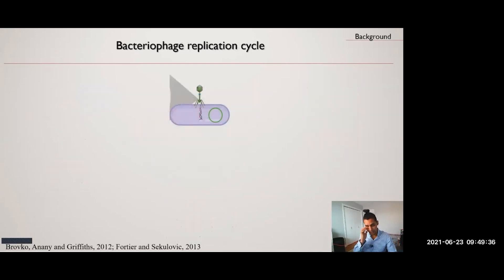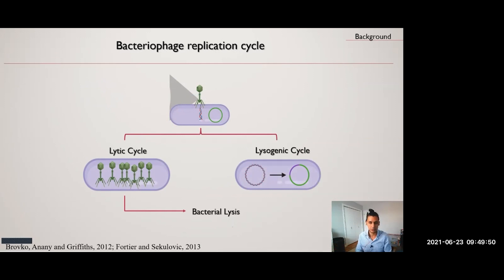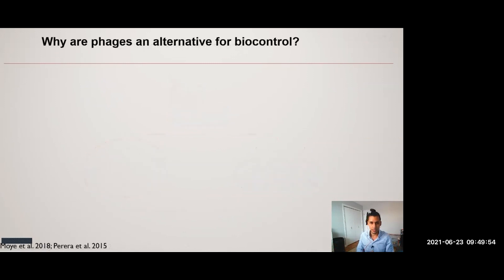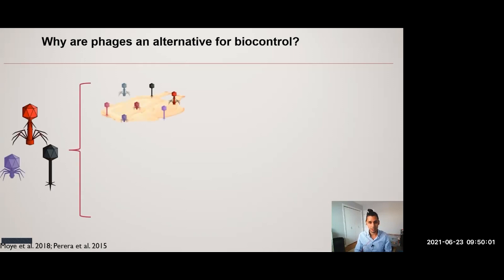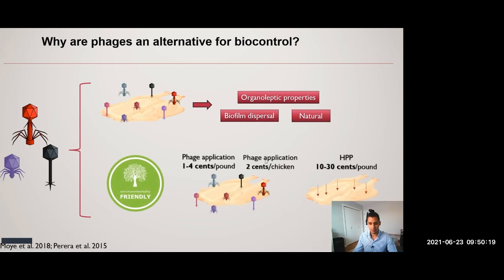Phages can replicate via two different cycles: the lytic cycle and the lysogenic cycle. We are focusing on the lytic cycle because it leads to bacterial lysis — the killing of bacteria — which is what we want. The application of these viruses directly on food products has demonstrated no effect on the organoleptic properties of the food product. They can also encode for biofilm dispersal enzymes and are considered a natural and environmentally friendly approach. Their application has been estimated at around 1 to 4 cents per pound of product, and specifically 2 cents per chicken carcass.